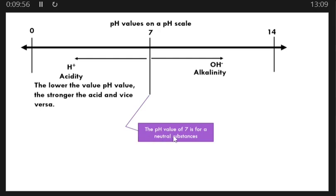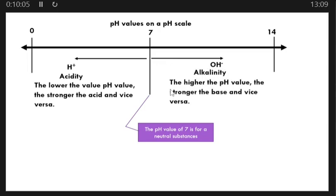The pH value of 7 is for a neutral substance. The higher the pH value, the stronger the base, and vice versa. Moving from 7 toward 14, pH values increase, so higher pH means a stronger base and lower pH means a weaker base. Substances with pH from 7 to 14 are alkaline.